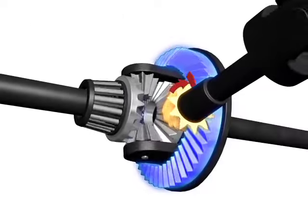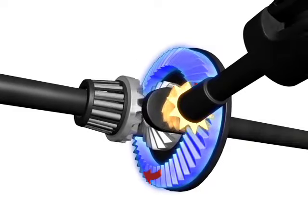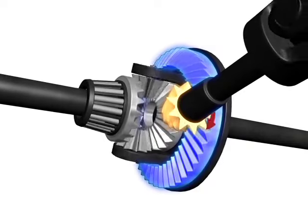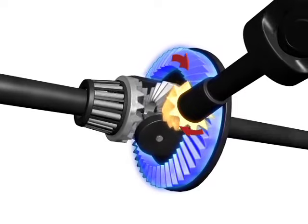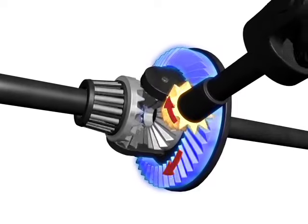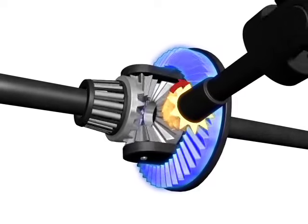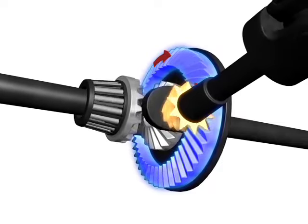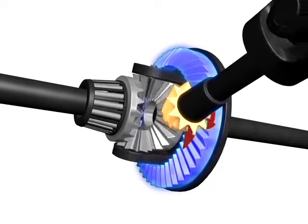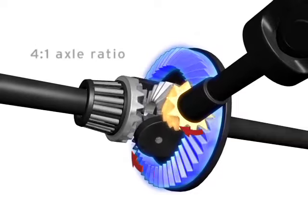Notice that the pinion gear turns at a different speed than the ring gear. The ratio between these two gears is called the axle ratio. In this example, the ring gear turns one time for every four revolutions of the pinion gear. This axle would be said to have a 4 to 1 ratio.